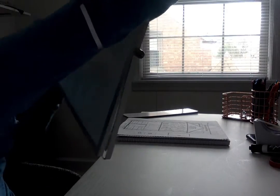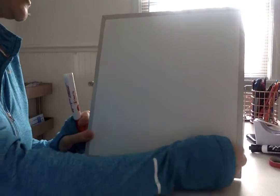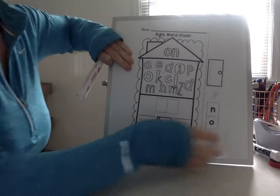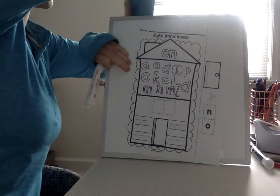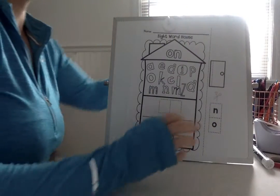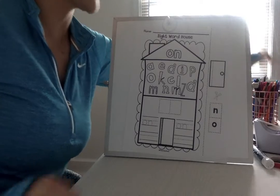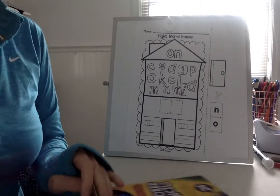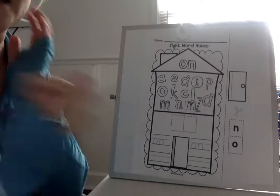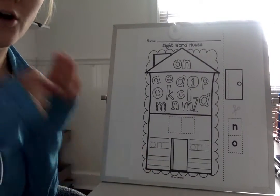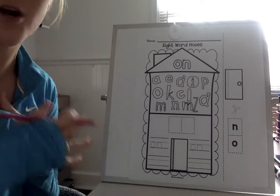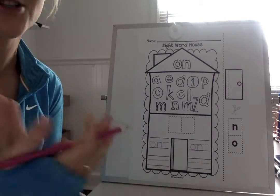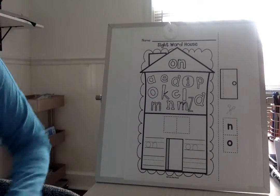So the last thing we are going to do today with our sight word on is our sight word house. This is one we've done plenty of times before with all our other sight words. So this is going to be on Class Dojo. If you want to go ahead and print it out and have your child do it, take a picture, upload it — would love to see it. If you don't have access to a printer, that is totally fine. Just follow along with me right now.